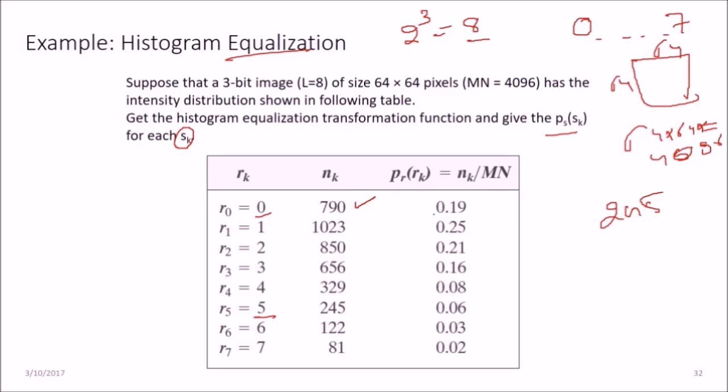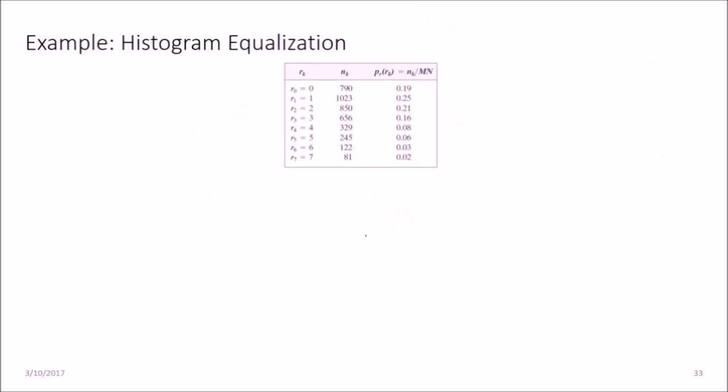So what we are going to do? We will perform this action: 790 by 4096. So this will be 0.19. Again for this one, 1023 by 4096, this will be 0.25. And we will do it for every number here, this is the final number, then this we have achieved.